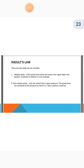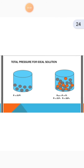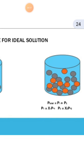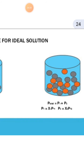Now the next topic is total pressure for an ideal solution. The total pressure is discussed here. For an ideal solution, we can see P1 = x1 × P°1 shown in the first diagram, and in the second diagram we look at P total = P1 plus P2. That is the total pressure.